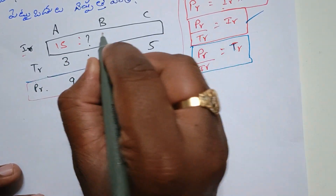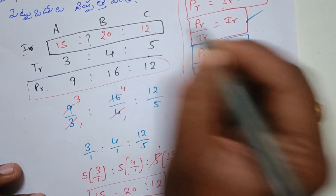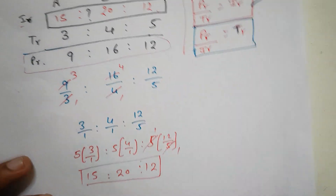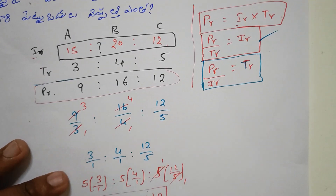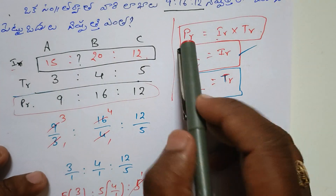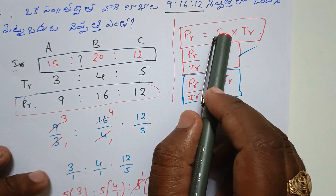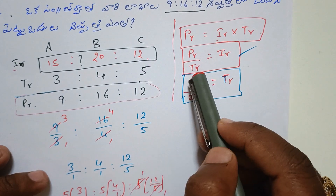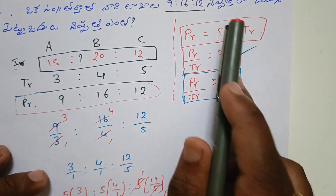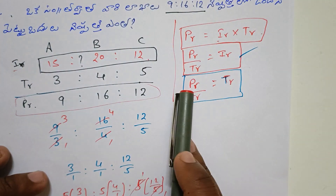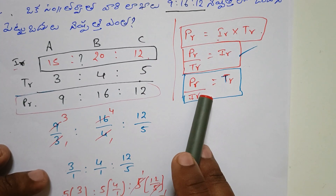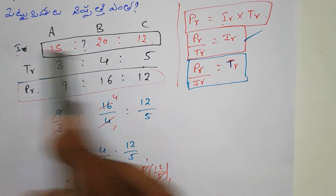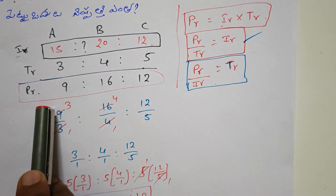Investment ratio is 15 to 20 is to 12. That is why we put the profit ratio through this formula. The answer is 15 is to 20 is to 12.